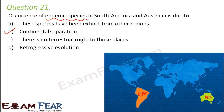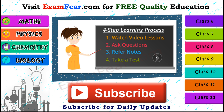Retrogressive evolution refers to evolution where complex forms of organisms develop from simple forms — there is no concept of retrogressive evolution relevant here. Thank you. Please visit examfear.com for free quality education through a simple four-step learning process: watch video lessons, ask questions, refer to notes, and take free online tests. Content is available for classes 6 to 12 in physics, chemistry, mathematics, and biology, along with practical videos. Please subscribe to our channel for daily updates. Thank you.